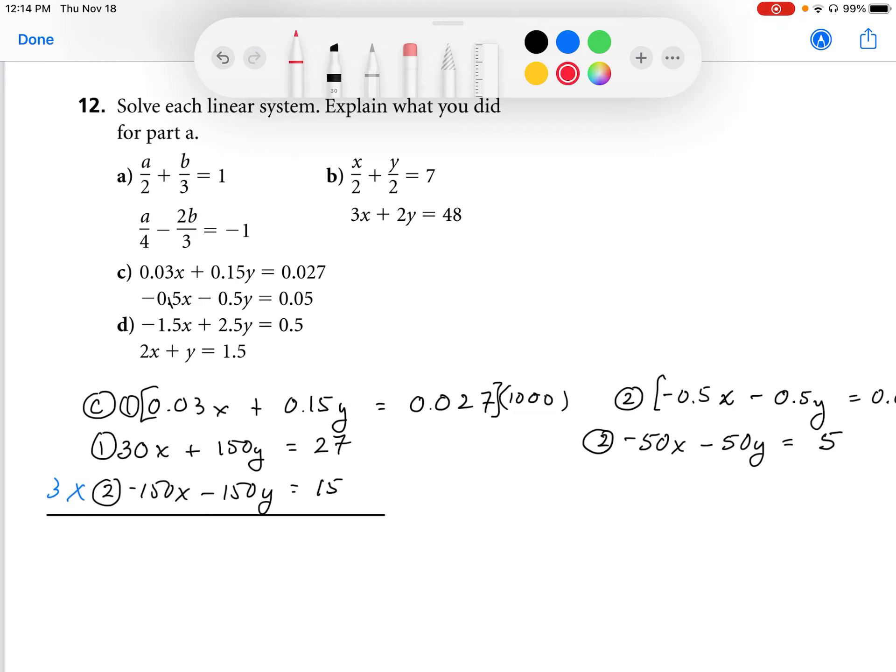The plus 150 and the minus 150, these are zero pairs. So if I add these together, I end up with negative 120x, and that's going to be equal to positive 42.